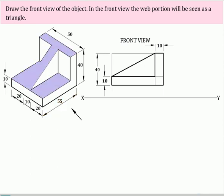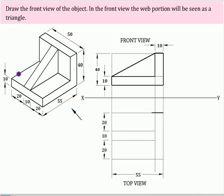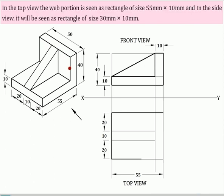Now draw the projectors from the front view vertically downward and complete the top view. In the top view, the web portion will be seen as a rectangle of size 55mm by 10mm.